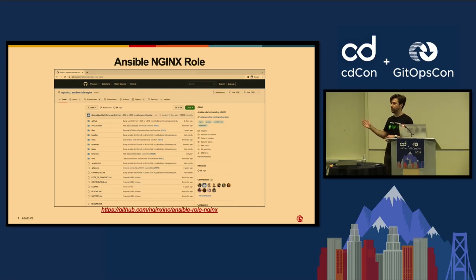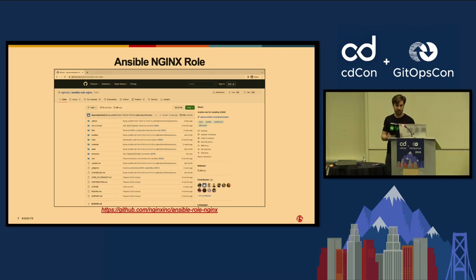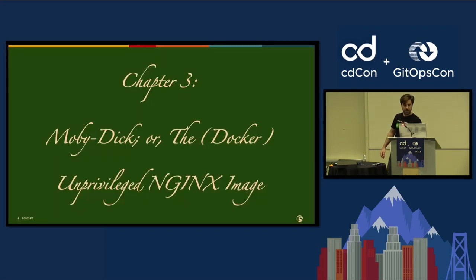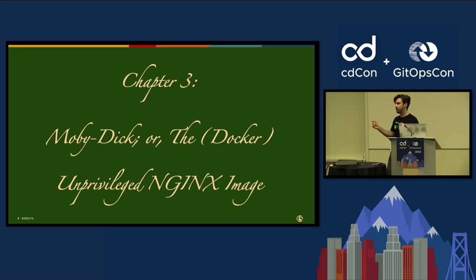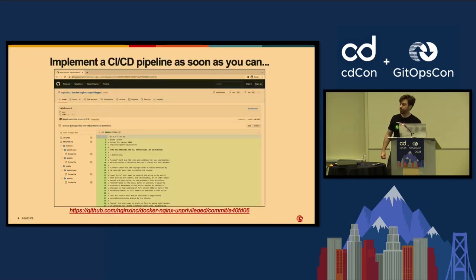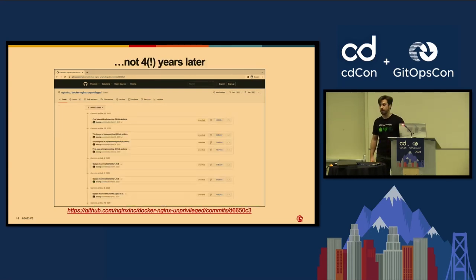Ansible — everyone knows Docker; just in case you don't know Ansible, the TLDR is it's a configuration management tool, not unlike Puppet, which is one of the sponsors here. With that, let me move on to chapter three: Moby Dick, or the Docker Unprivileged Nginx image. I'm going to cover some of the lessons I've learned, mostly in chronological order of when they were implemented. We'll start with the first lesson: implement your CICD pipeline as soon as you can — not four years later, which is how long it took me.